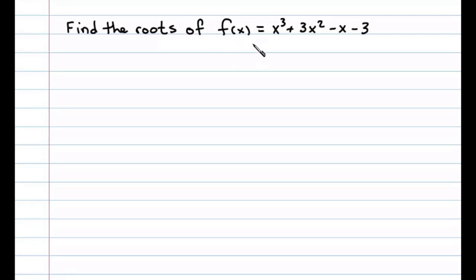Here we're asked to find the roots of a polynomial function f(x). To do that, we have to set the function equal to 0 and then solve for x. In this case we have x³ + 3x² - x - 3 = 0.